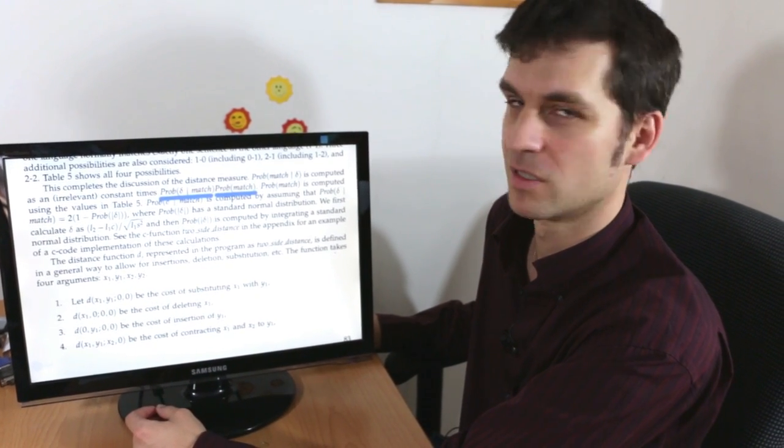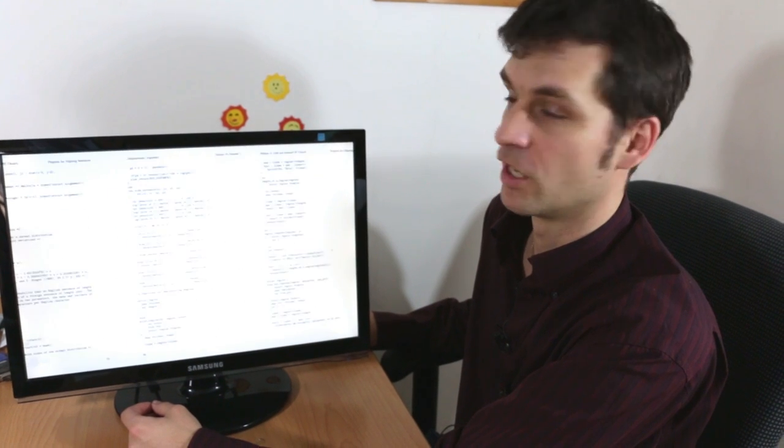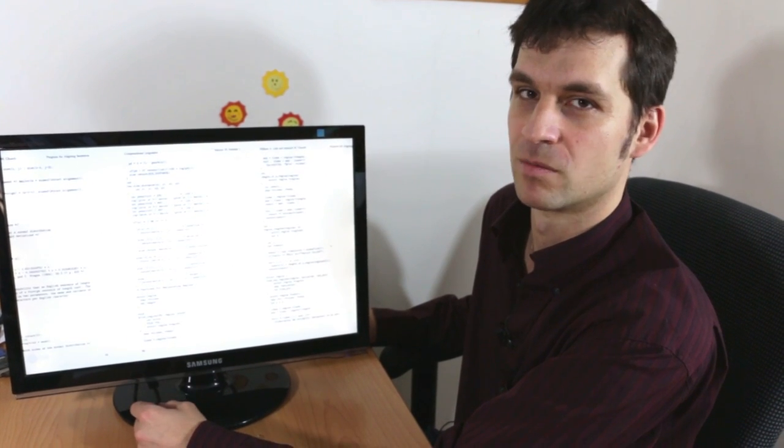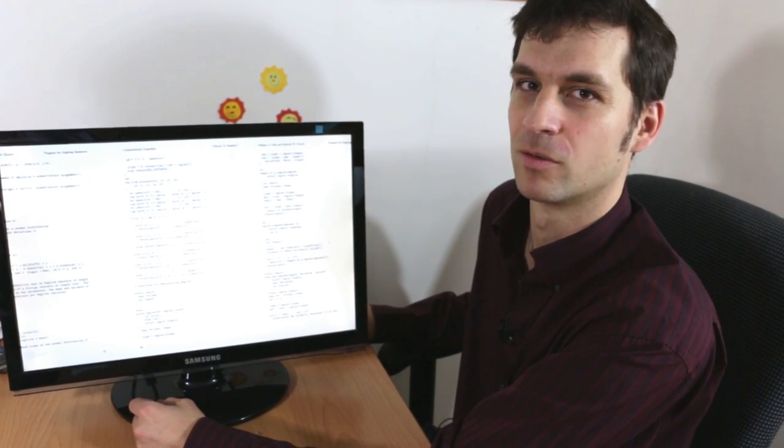And in case you were wondering how to code this, the printed Gale-Church paper in computational linguistics actually contains the C source code.